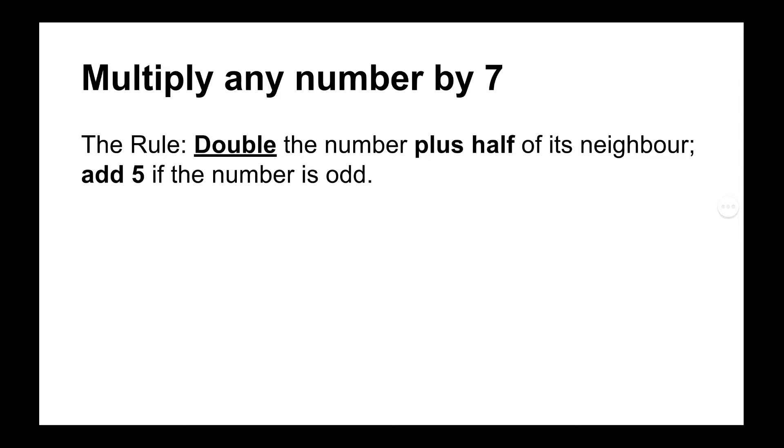So the rule for multiplying any number by 7 is to double the number plus half of its neighbor and to add 5 if the number is odd.